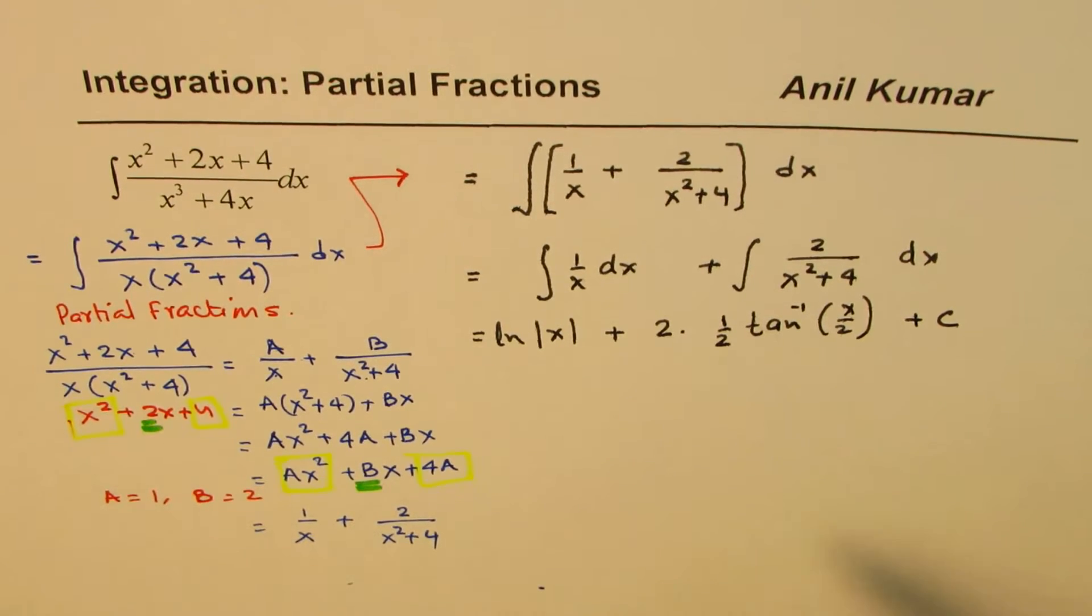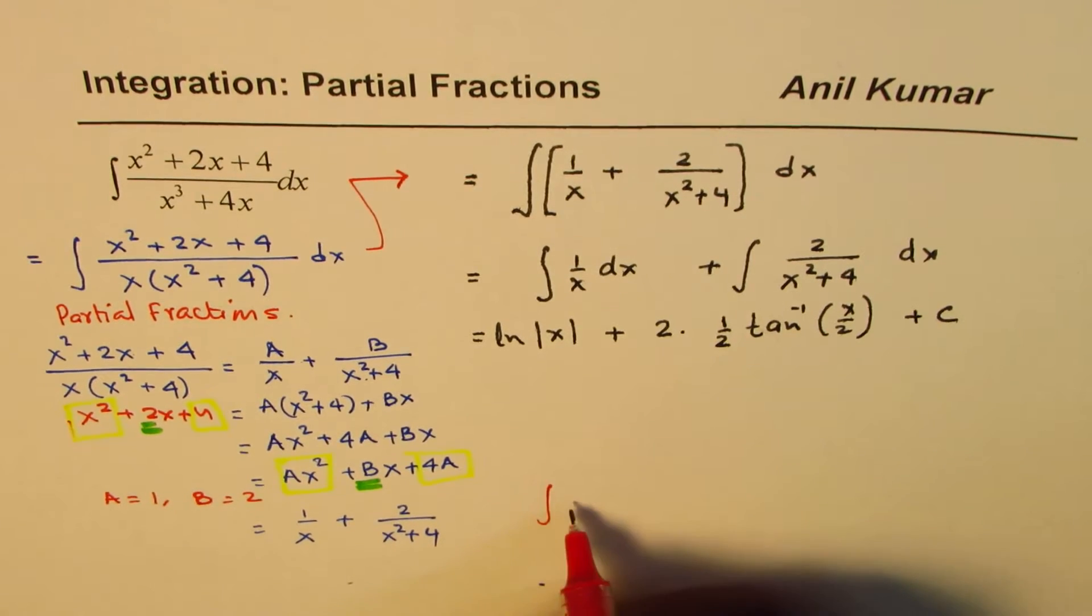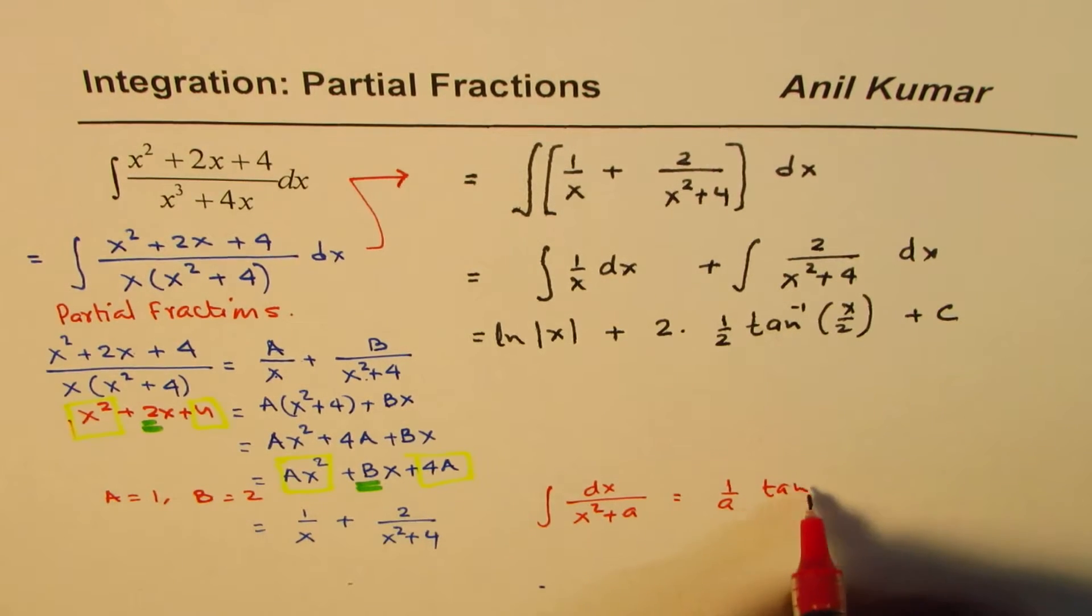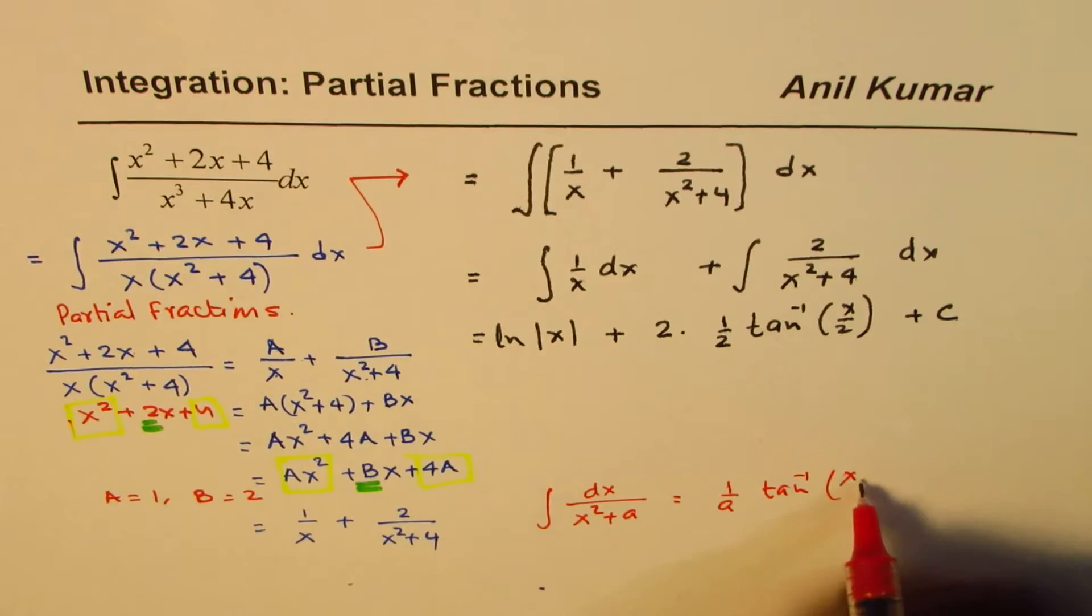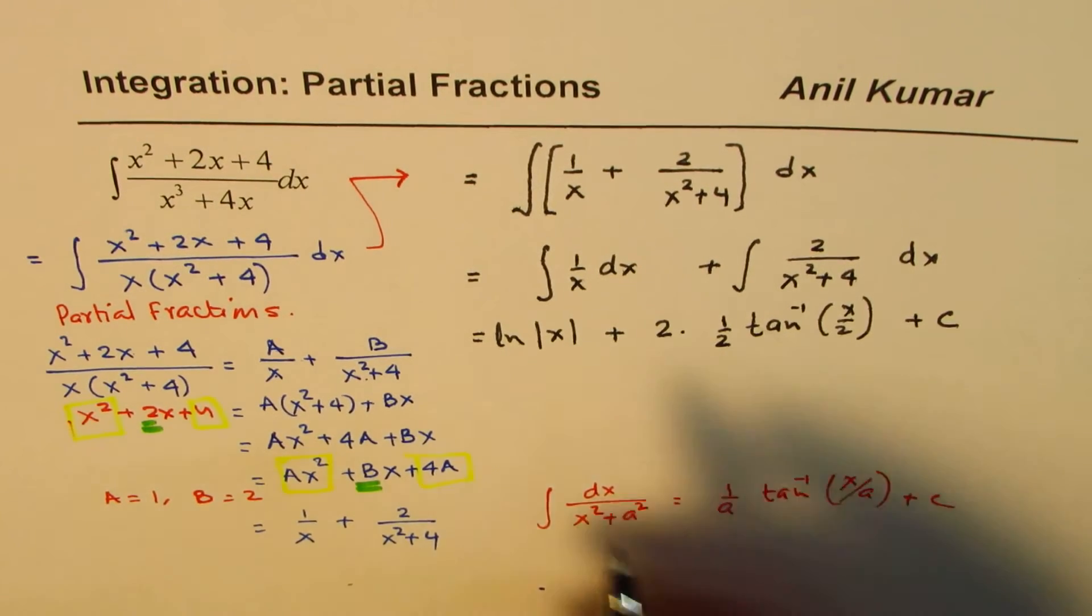So the formula used here, formula used here is, let me write here, integral of dx over x squared plus a squared is equals to 1 over a tan inverse of x over a plus C. So that is the formula which we used here. Now we could rewrite this as,